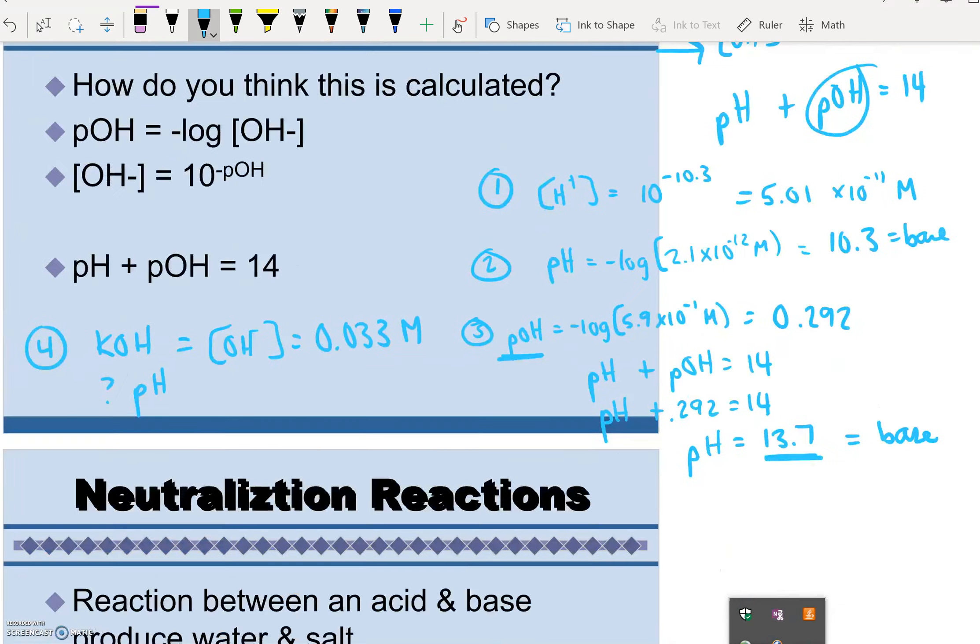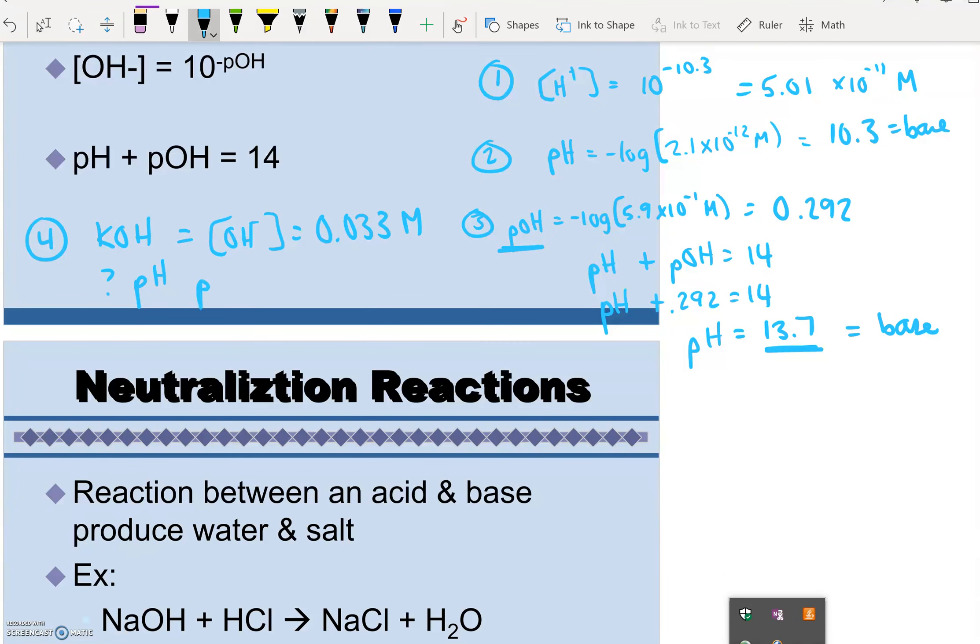So my pOH is going to be negative log of 0.033. So my pOH is equal to 1.48. So 14 minus 1.48 gives me a pH of 12.5. And that is a base.